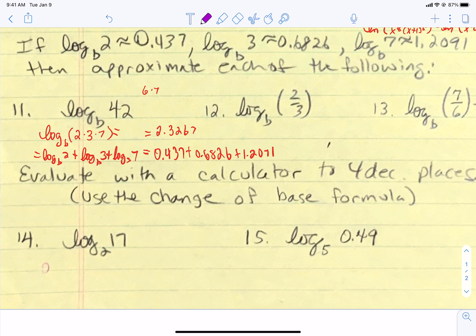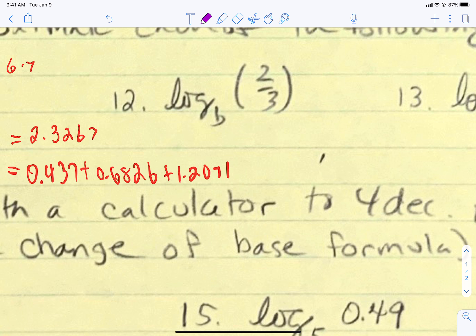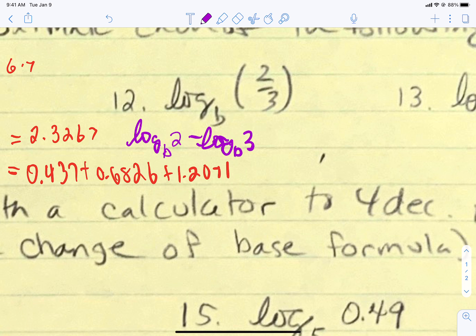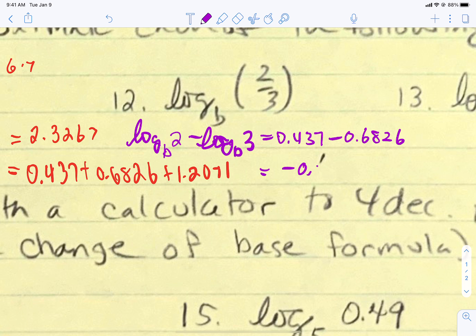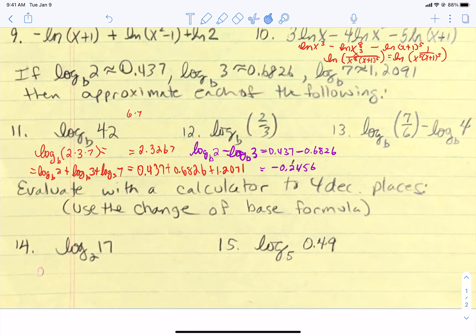For number 12, we have to relate the number to 2, 3, and 7. It's a fraction with the top being 2 and the bottom being 3, so we can pull it apart by subtracting. This is just the log base B of 2 minus the log base B of 3. We know those values: 0.437 minus 0.6826 is negative 0.2456. We're just taking our rules, splitting things up as fractions, and adding or subtracting the pieces.